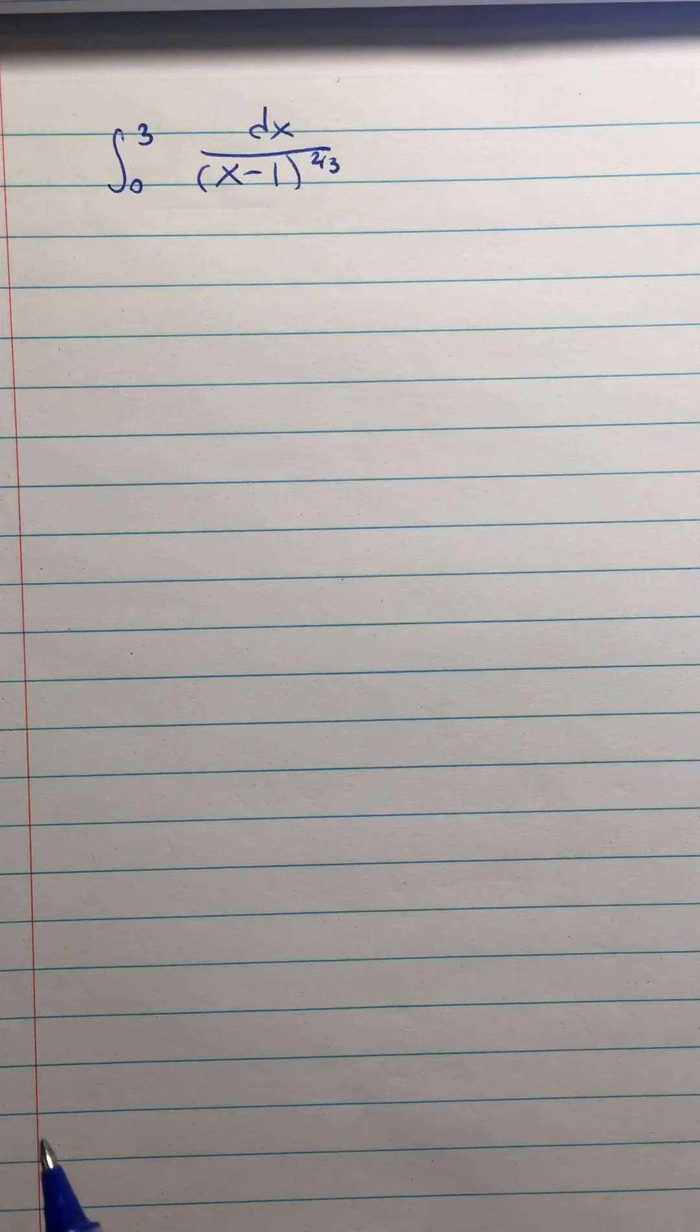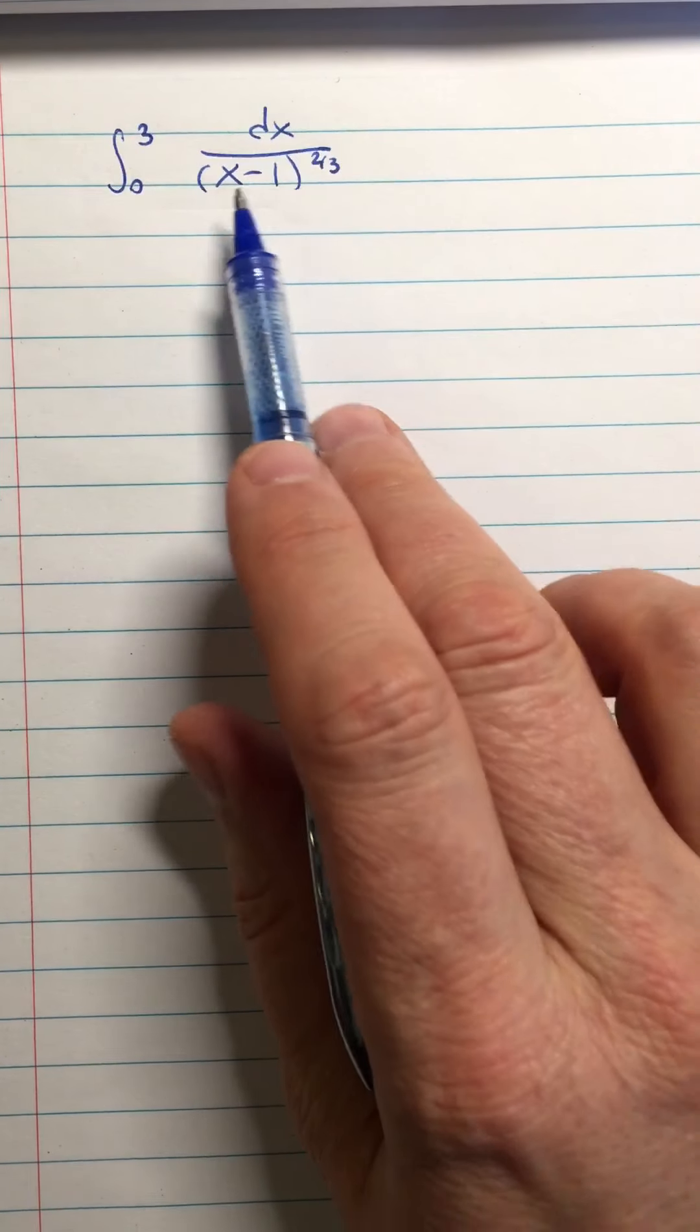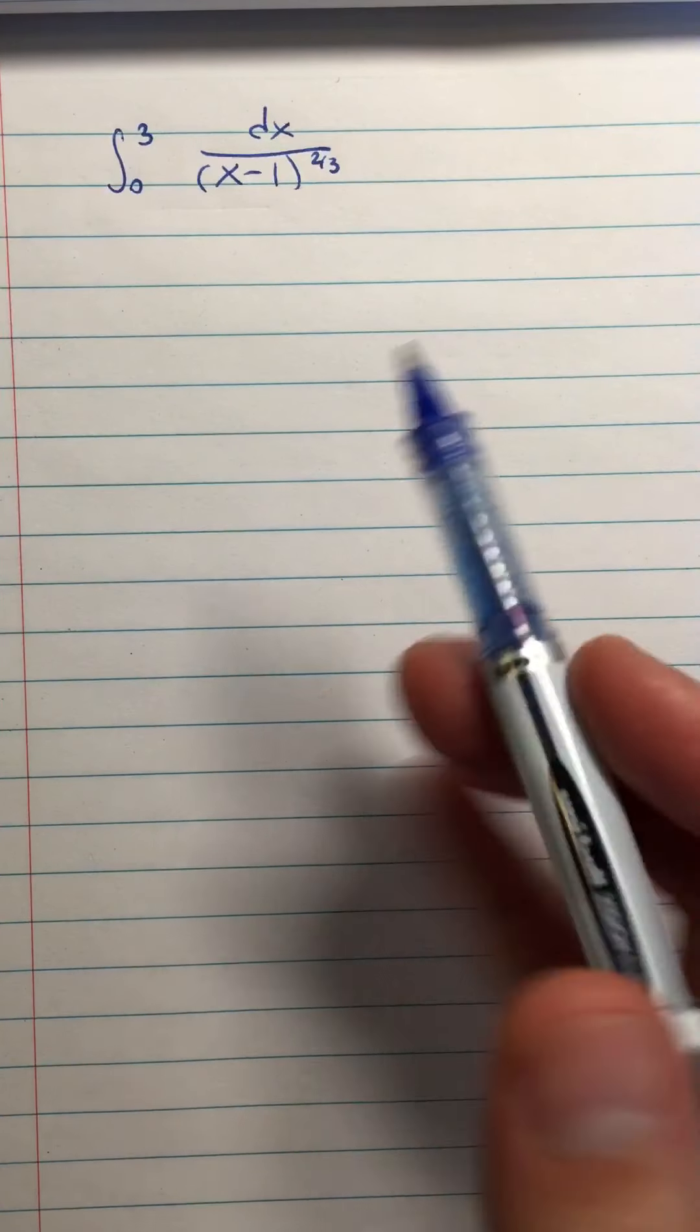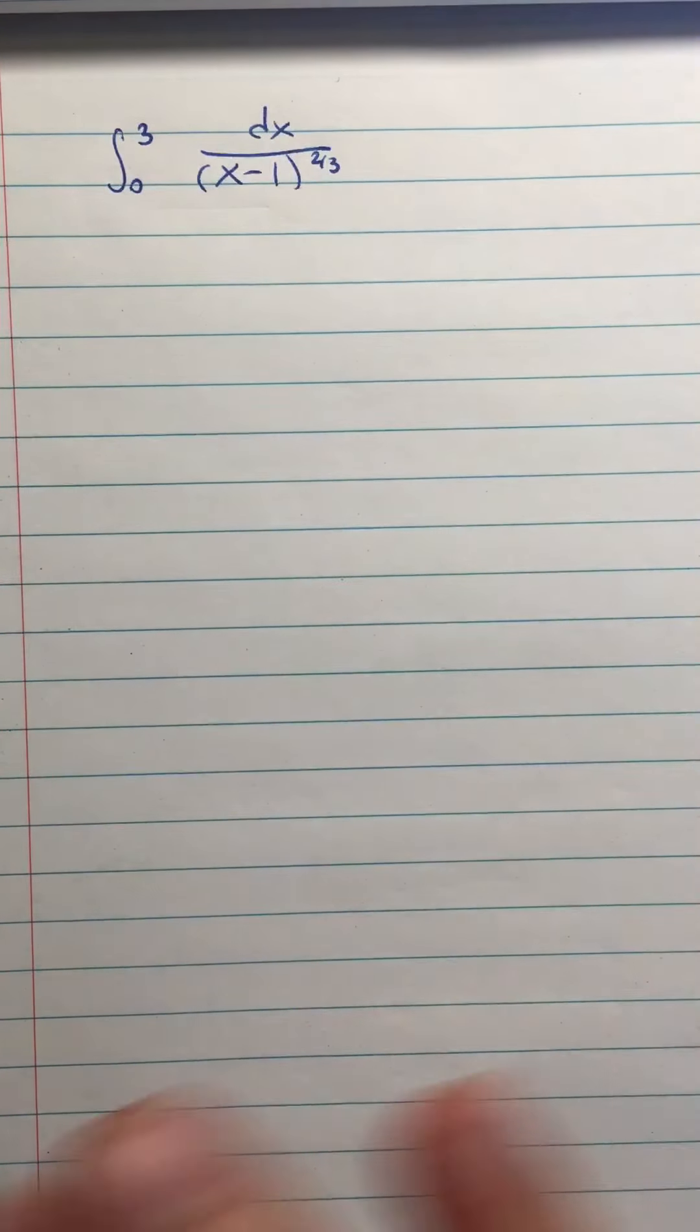So at the very end of that last video, I copied the problem down wrong. This should be x minus 1 to the 2/3 power, not 3/2 power. Otherwise, you end up with the square root of a negative, which doesn't work very well.